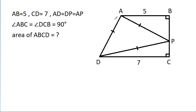In this video, we have given that AB is 5, CD is 7, and AD is equal to DP, which is equal to AP. Angle ABC is 90 degrees and angle DCB is 90 degrees. Then the area of ABCD is equal to what?